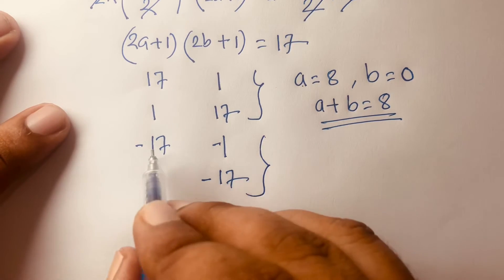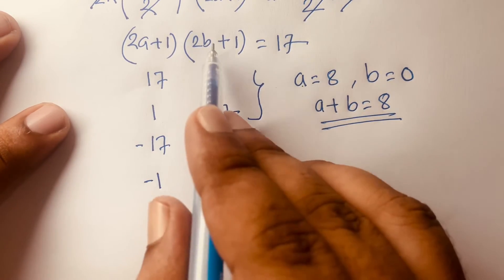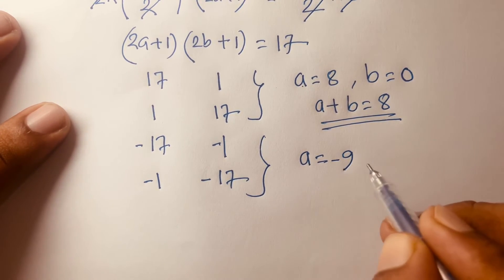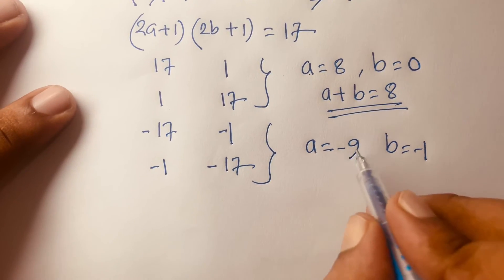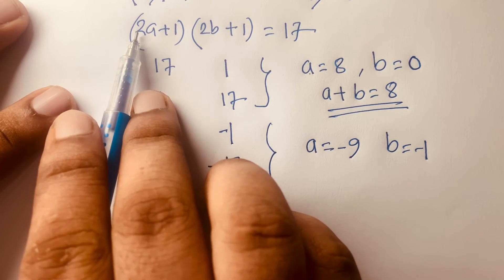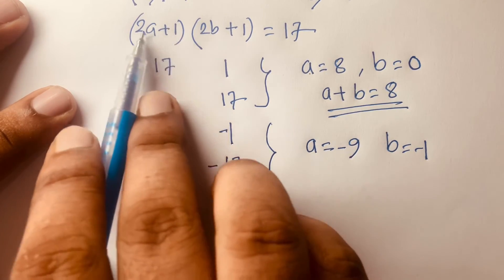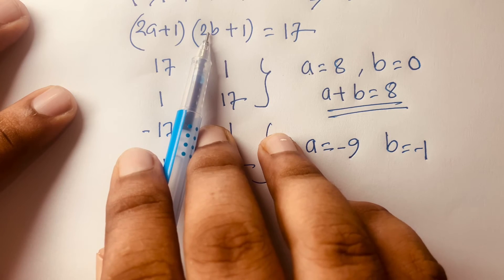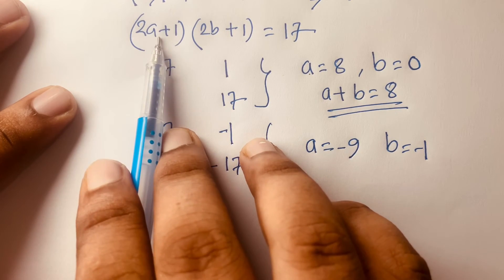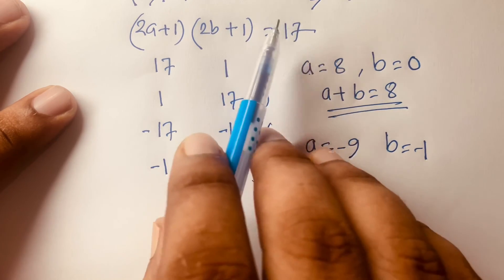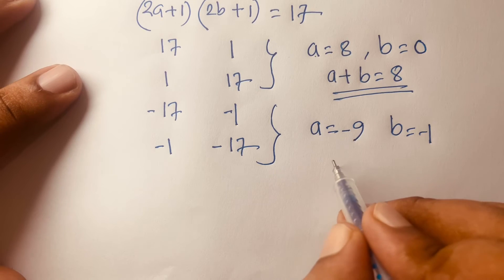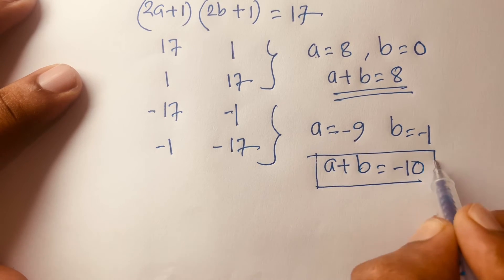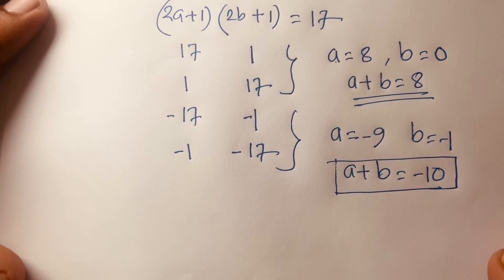For the negative factor pair, 2a plus 1 equals minus 17 and 2b plus 1 equals minus 1, giving a equals minus 9 and b equals minus 1. Check: minus 9 times 2 equals minus 18, plus 1 equals minus 17; and 2 times minus 1 plus 1 equals minus 1; so minus 17 times minus 1 equals 17. Therefore a plus b equals minus 10.